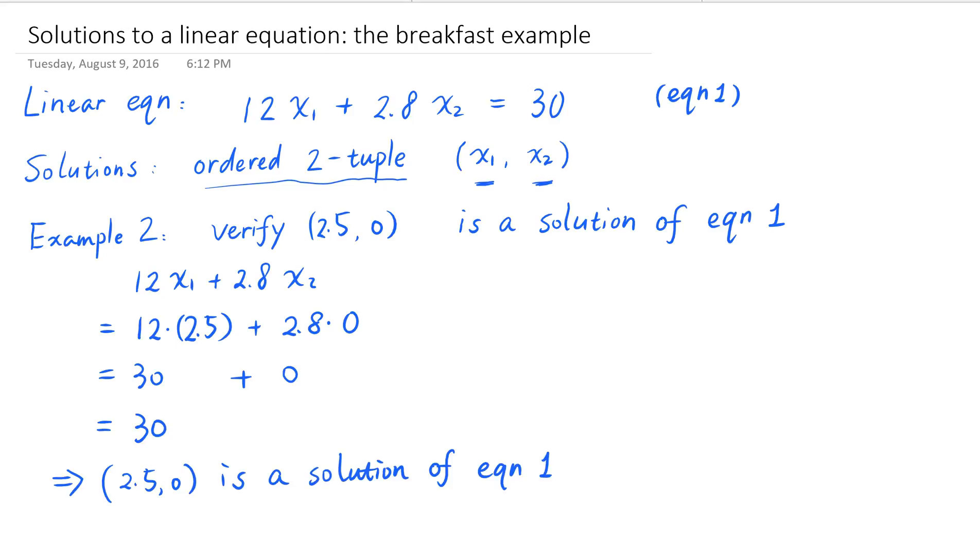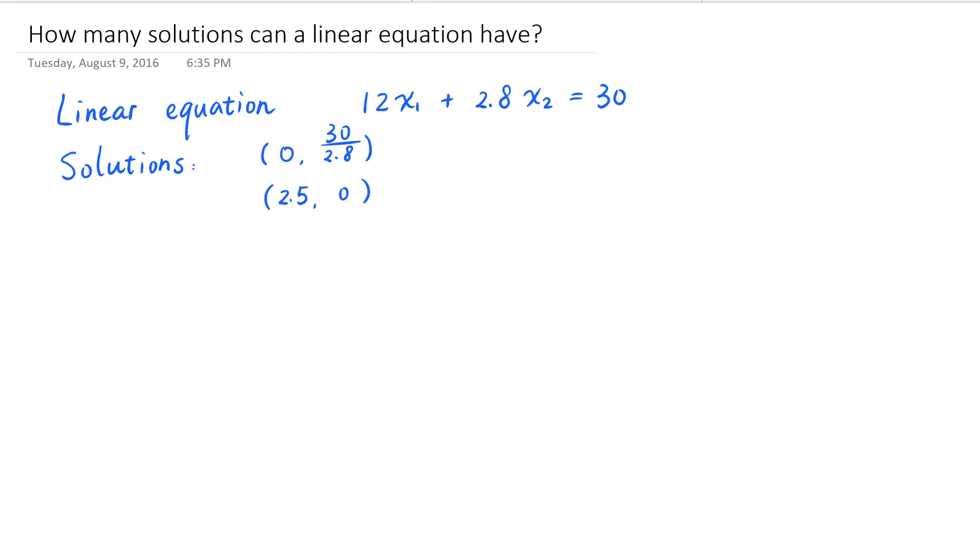In other words, if I have two and a half cups of yogurt and no granola, I can also get 30 grams of protein. So we already have more than one solution to this linear equation, and we can actually find more. You can verify on your own that x sub 1 equal to 1 and x sub 2 equal to 18 over 2.8 is a solution, and x sub 1 equal to 2, x sub 2 equal to 6 over 2.8 is also a solution, et cetera, et cetera, et cetera.